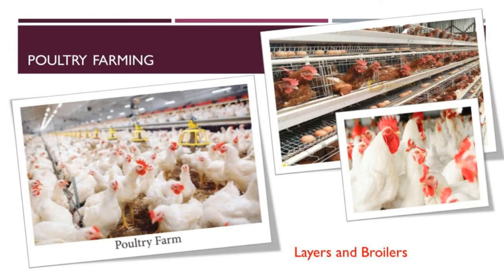Poultry farming is the process of raising domesticated birds such as chicken, duck, turkey, and geese for the purpose of getting meat and eggs for food. Poultry are raised in large numbers, with chickens being the most common. Chickens are broadly of two types: layers and broilers. Layers are egg-laying chickens; broilers are those raised for meat. Poultry farming requires safe and sufficient space, plenty of water, proper ventilation, and regular feed rich in protein, fats, and vitamins. Poultry feed is comprised of maize, wheat, millet, and rice bran in mashed form and groundnut cakes.